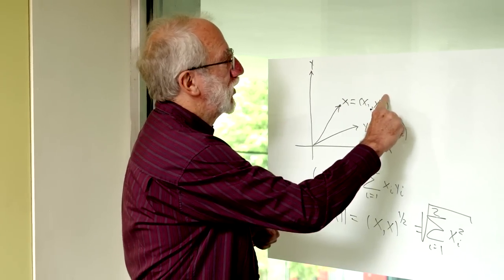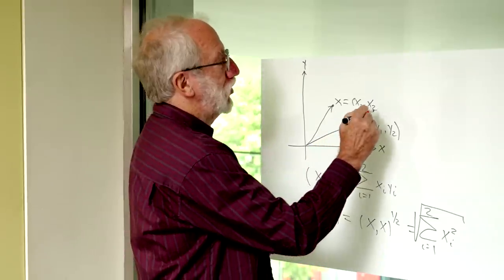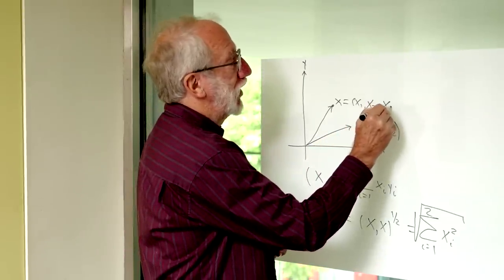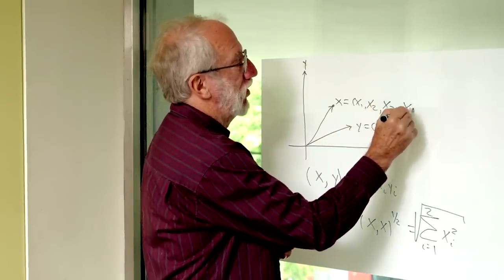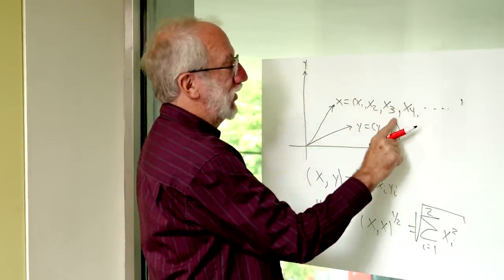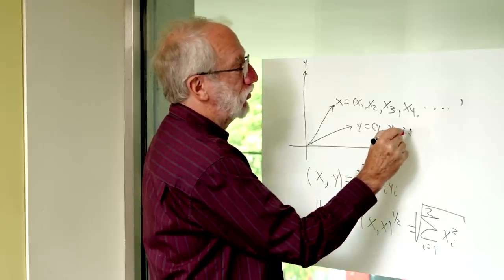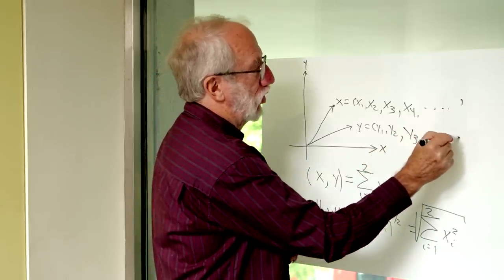So, in particular, instead of having a vector x1, x2, no longer in the plane, it's an infinite number of coordinates, all the way out to infinity. And, of course, the y1, y2 has coordinates all the way out to infinity.